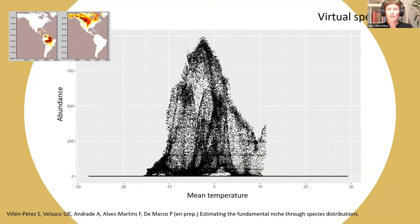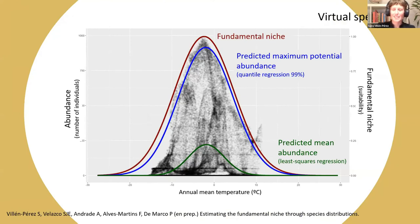This is how it looks, one of the first examples. At this point, I hope you are thinking, 'Wow, a polygonal-shaped pattern, yes.' But most interesting is that the upper part of the curve, as expected, is where we found the fundamental niche. The fundamental niche is in the upper boundary of this distribution, and we are approaching it using quantile regressions.